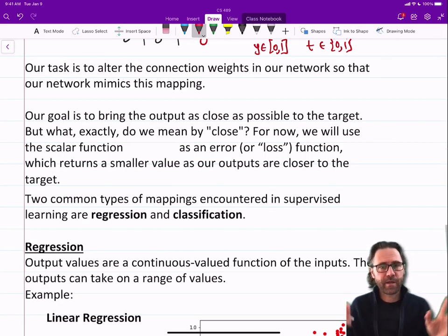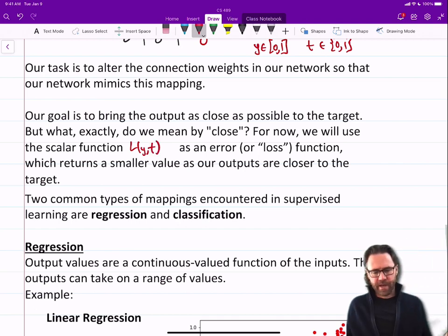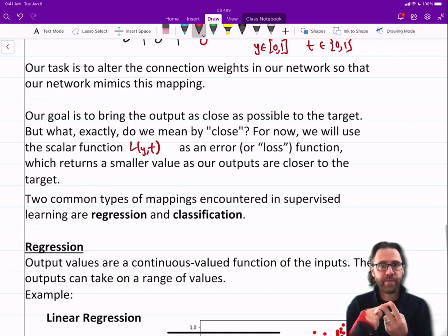But what exactly do we mean by close? So for now, we'll use the scalar function L(Y, T) as an error or a loss or a cost function, which returns a smaller value as our outputs are closer to the target. So it takes as input the output of our network and the target, and evaluates how close they are. And the further apart they were, the bigger the number. So essentially, we want to minimize that loss or cost.